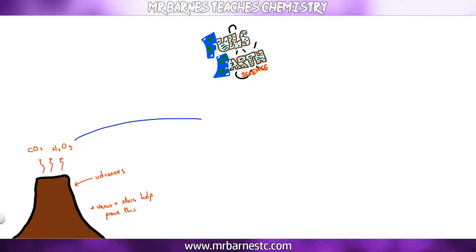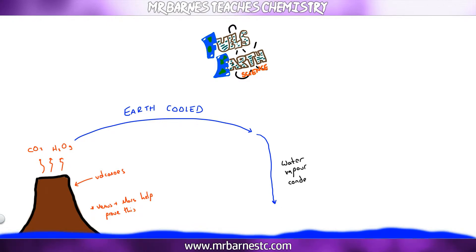So what happened to the water vapor? Simply the Earth cooled. When the Earth cooled, the water vapor condensed and it turned into our oceans.